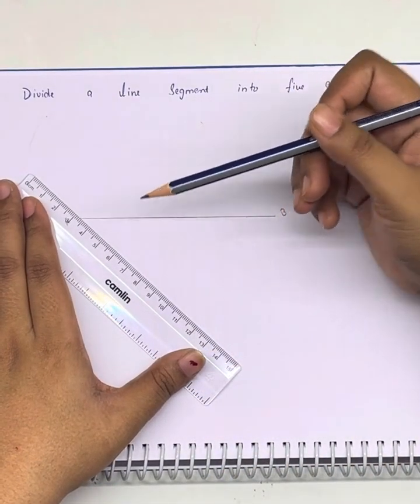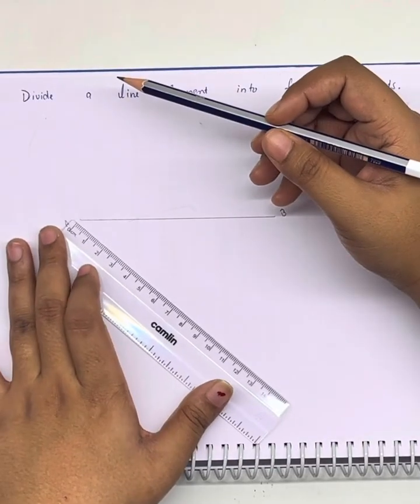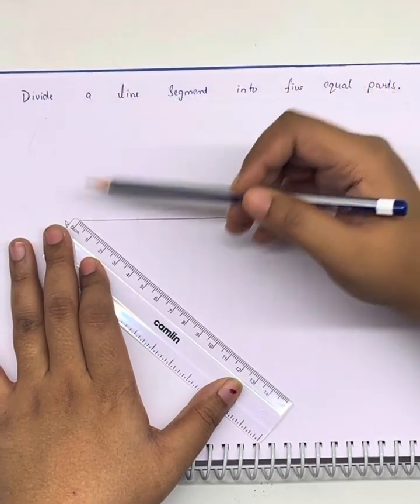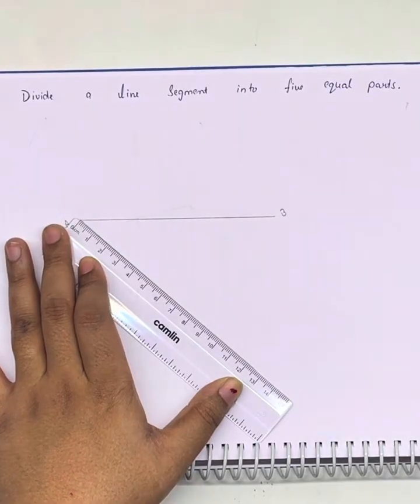Inclined to this line at any angle. We will draw another line of any given length.